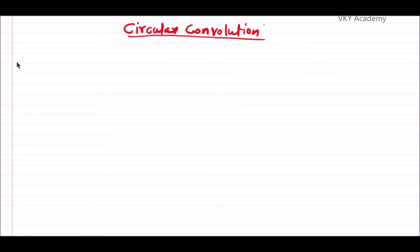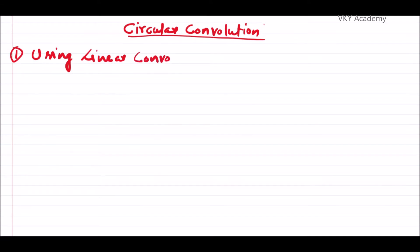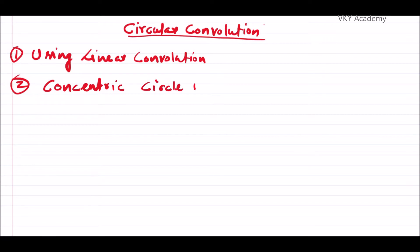In this video lecture on digital signal processing, we will discuss different methods of determining circular convolution. The circular convolution of two periodic signals can be determined in various ways. The first method is using linear convolution, the second method is the concentric circle method, and the third one is the matrix method.